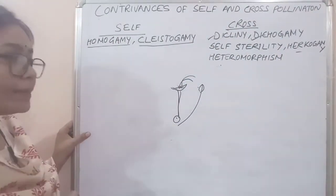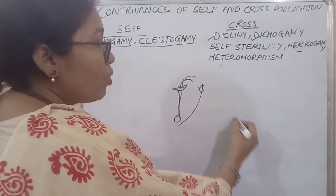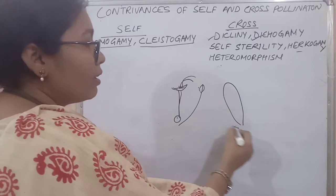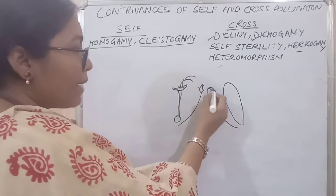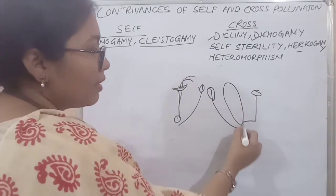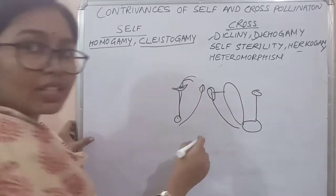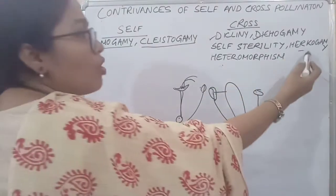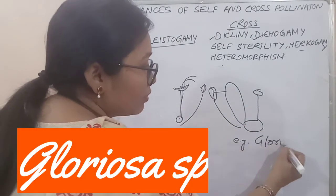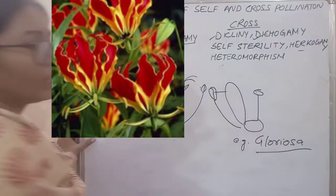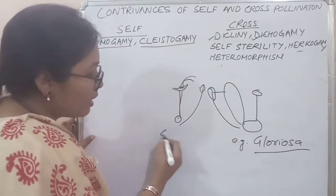And what is herkogamy? Herkogamy means a physical barrier — when the corolla or calyx, mainly the corolla, develops a barrier between the anther and the stigma, so the anther cannot cross it and reach the stigma. These are called herkogamy. The example is Gloriosa, whose Bengali name is Agnishikha.